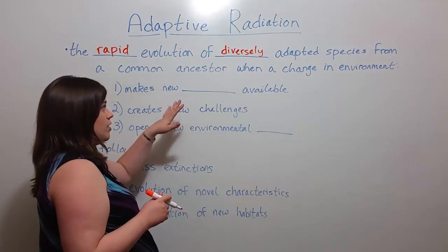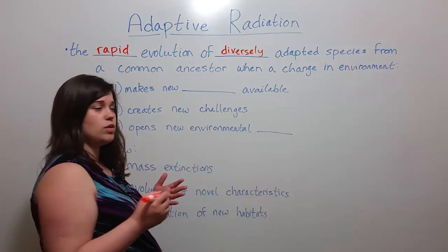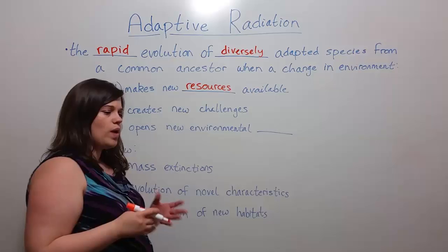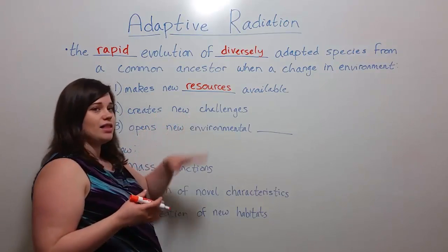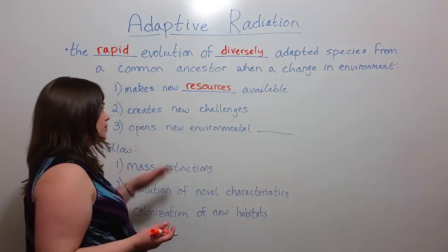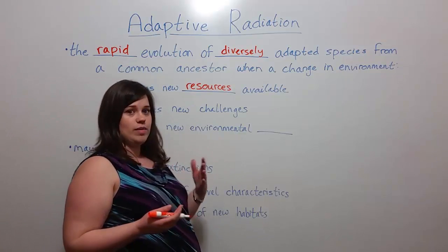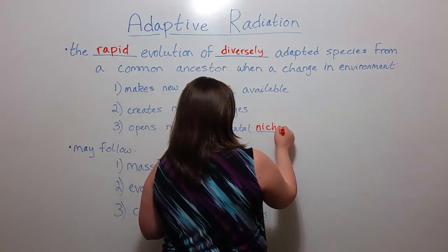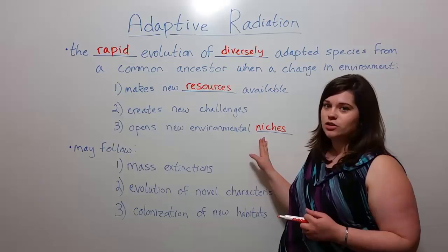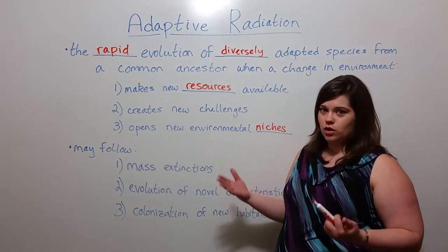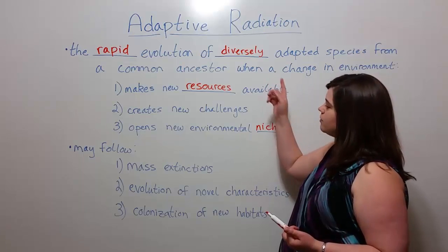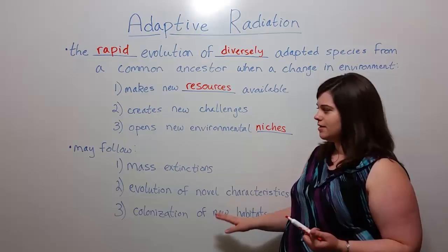The three triggering conditions are: whenever there are suddenly new resources available in the environment; when in a given environment suddenly new challenges to survival are presented that allow new traits to be selected for; and also the opening of new environmental niches. This would be when suddenly there are new habitats, new sub-habitats, or new micro-environments within a larger environment that are suddenly available for species to move into. Now adaptive radiation may follow a few different types of events.